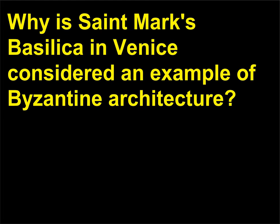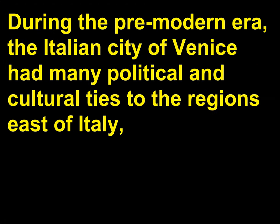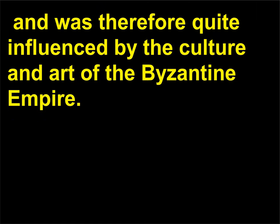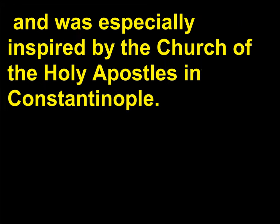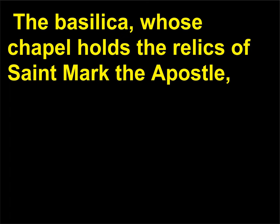Why is Saint Mark's Basilica in Venice considered an example of Byzantine architecture? During the premodern era, the Italian city of Venice had many political and cultural ties to the regions east of Italy, and was therefore quite influenced by the culture and art of the Byzantine Empire. Saint Mark's Basilica is a grand architectural example of this influence, and was especially inspired by the Church of the Holy Apostles in Constantinople. The basilica, whose chapel holds the relics of Saint Mark the Apostle, is divided into five sections, each topped with a dome.